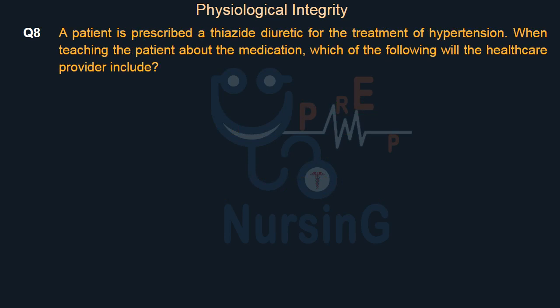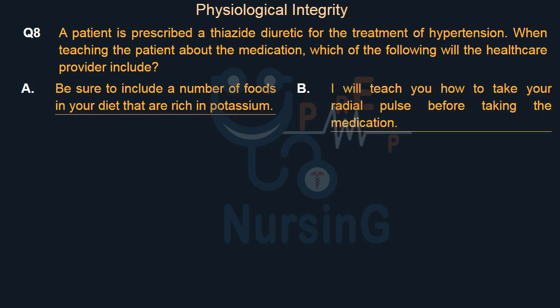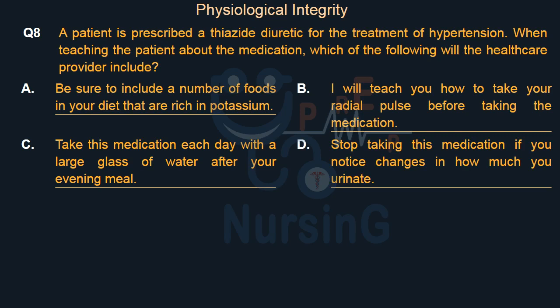A patient is prescribed a thiazide diuretic for the treatment of hypertension. When teaching the patient about the medication, which of the following will the healthcare provider include? Option A: Be sure to include foods in your diet that are rich in potassium. Option B: I will teach you how to take your radial pulse before taking the medication. Option C: Take this medication each day with a large glass of water after your evening meal. Option D: Stop taking this medication if you notice changes in how much you urinate. The right answer is Option A.